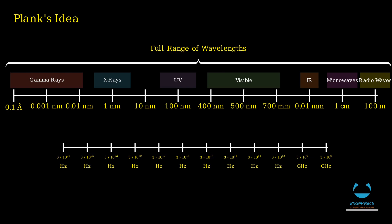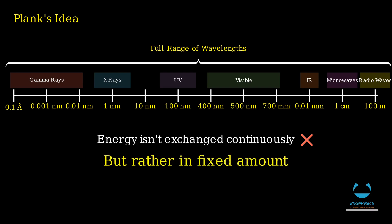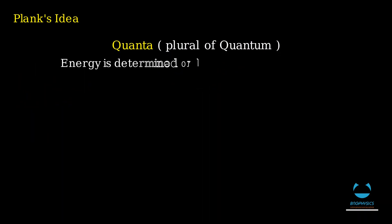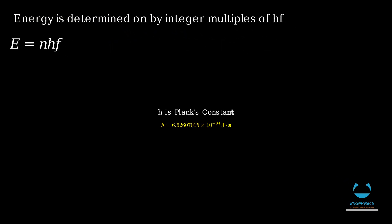In order to do so, he came up with an idea saying that energy isn't exchanged continuously, but rather in fixed amounts, which he called quanta or quantum. Planck argued that energy exchanged between light and matter could only happen in specific chunks or discrete amounts, determined only by integer multiples of hf, which he called the energy of quantum, where h is Planck's constant and f is the frequency.